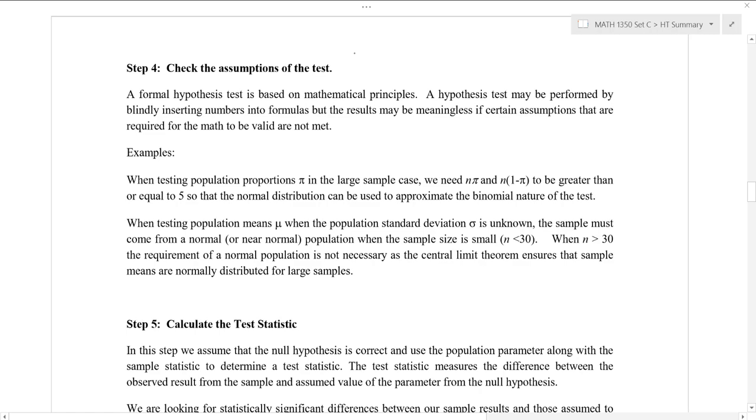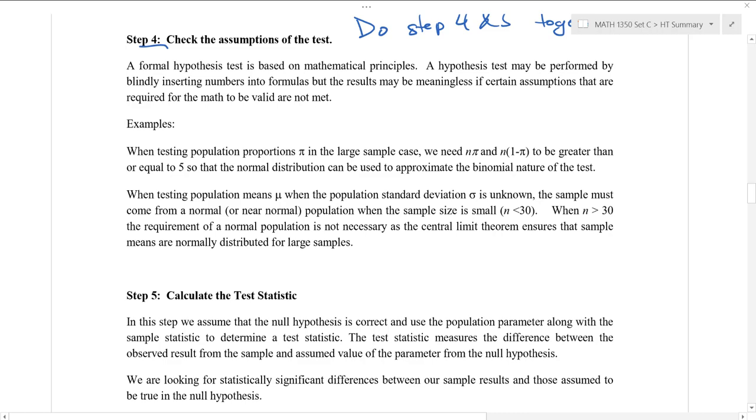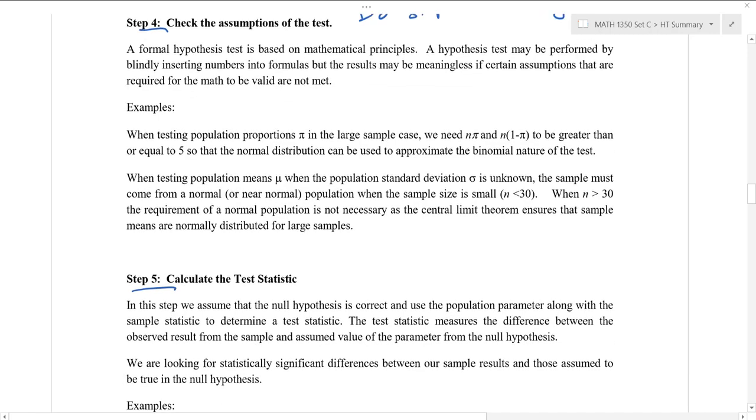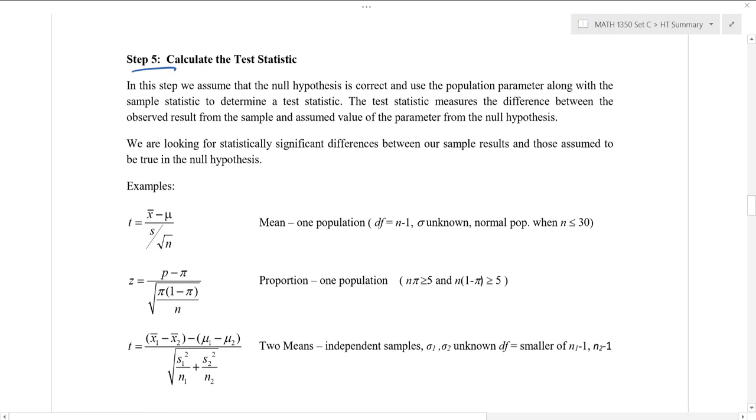I often do step 4 and 5 together. We're going to check the assumptions of the test in step 4 and step 5 we're going to calculate the test statistic. So for us, in this case, we are using large population. Our n is bigger than 30. But we don't have the true population standard deviation. We only have the sample standard deviation. So based on what we've learned so far, we're thinking of having some kind of t-test. There will be a number of different test statistics that we'll use in a lot of different cases. I think we'll have maybe up to 8. A few of them are listed down below.